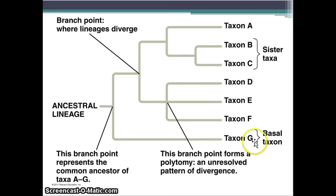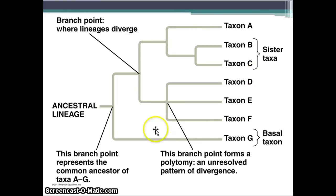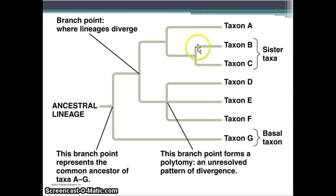Basal taxon refers to something that split off from the rest a long time ago. Sister taxon refers to two groups that are following one large tree and then branch out, and they are the most closely related to each other as far as the entire tree goes.